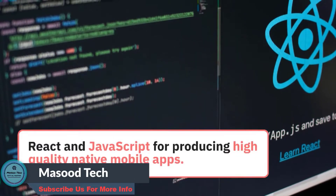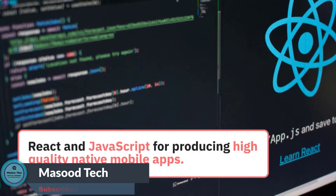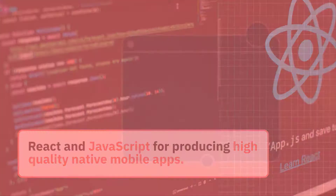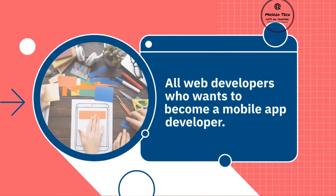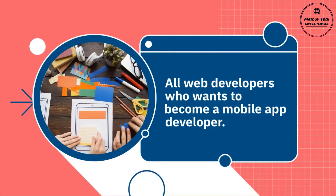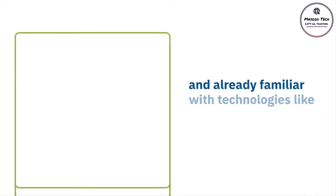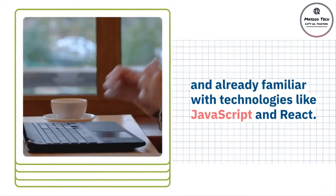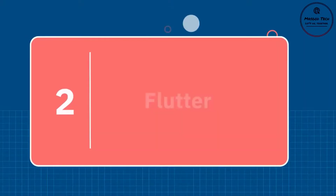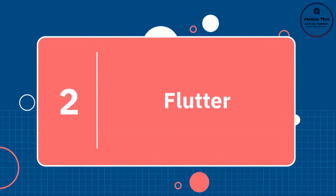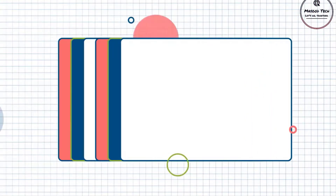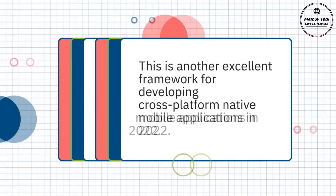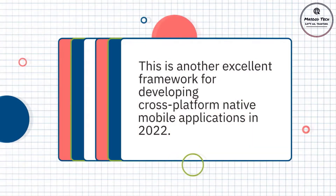If there's a best library or framework you can check out for developing native cross-platform mobile apps, it's React Native. It uses React and JavaScript for producing high-quality native mobile apps. It's the right choice for web developers who want to become a mobile app developer and are already familiar with technologies like JavaScript and React. If you are one of them, I suggest you learn React Native in 2022.